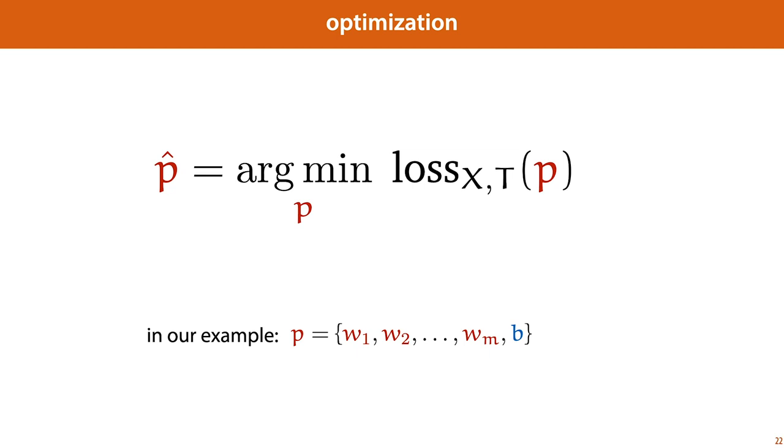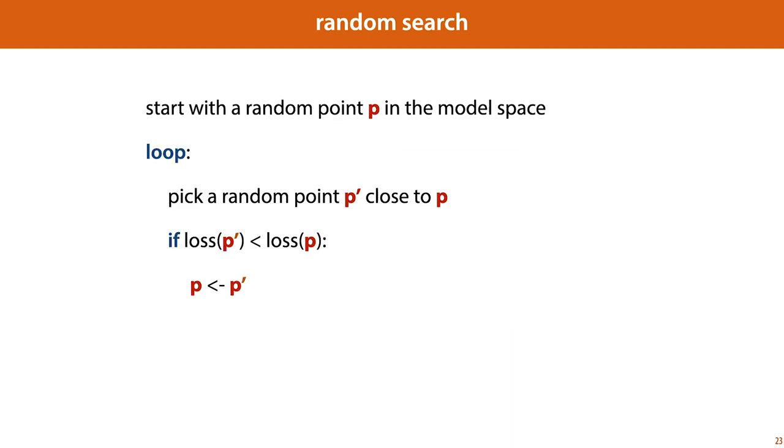Now, in machine learning, quite often we won't be able to find the absolute minimum of the loss landscape, so we'll look for ways to approximate this optimization problem. The first algorithm we'll look at is called random search. It's very simple and straightforward to implement, but it's already surprisingly powerful. We simply start with a random point somewhere in the model space, we enter a loop, we pick another random point close to p, and we'll define what that means later. If the new point has a better loss, a lower loss than the old point, then we switch to the new point. Then the new point becomes our current best guess, and we go back to the top of the loop, and we pick another point close to that one, and so on. If the new point doesn't have better loss, we discard it and stick with our current one, and we pick another random point.